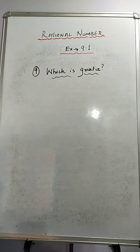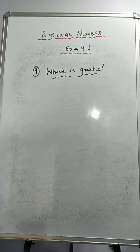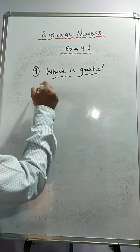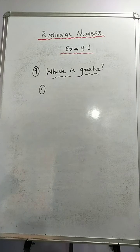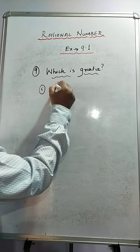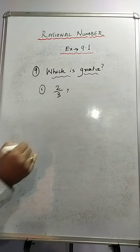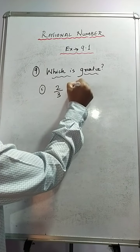Friends, in this session I will explain question number 9 and 10 of exercise 9.1. In question number 9 we have to find which is greater. Two rational numbers are given and you have to see which rational number is greater. In sum number 1 we have 2 by 3 and 5 upon 2.